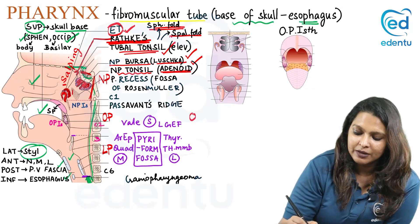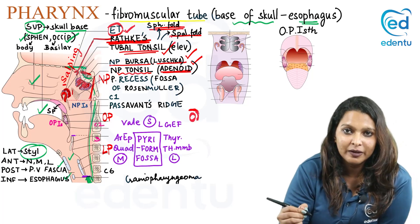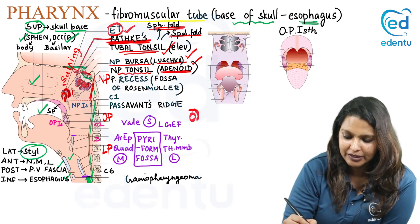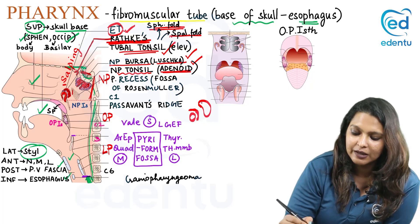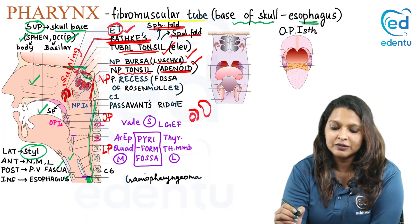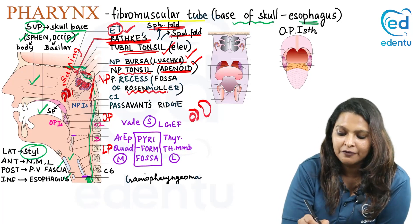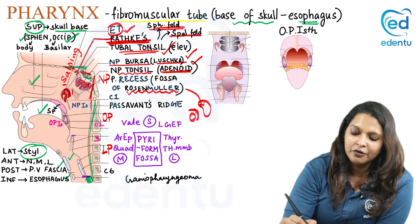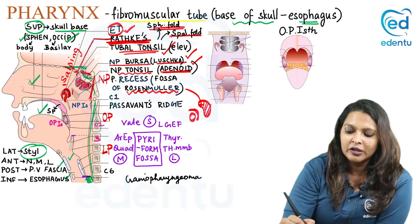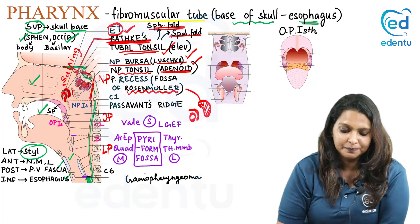The opening of the eustachian tube is on the lateral wall. Superior and posterior to it is the tubal tonsil causing the elevation. Further superior and posterior to it, there is a recess called the pharyngeal recess, also known as the fossa of Rosenmüller. All these structures are related to the lateral wall of the nasopharynx.